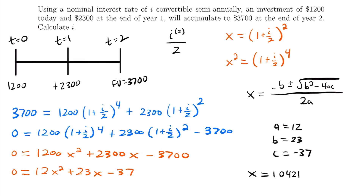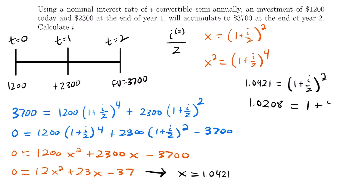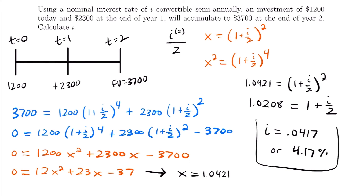Now we set x = 1.0421 equal to (1 + I/2)^2 and solve for I. Taking the square root of both sides: 1.0208 = 1 + I/2. Subtracting 1 and multiplying by 2 gives I = 0.0417, or 4.17%. That is the nominal annual interest rate convertible semi-annually that we were looking for.